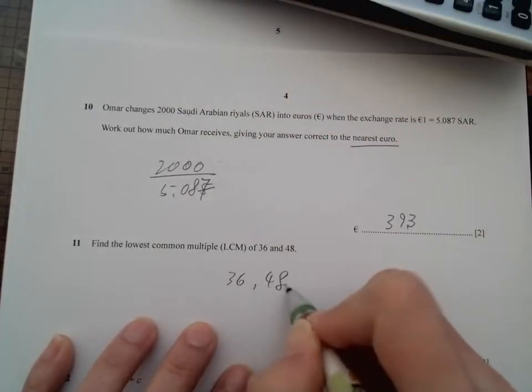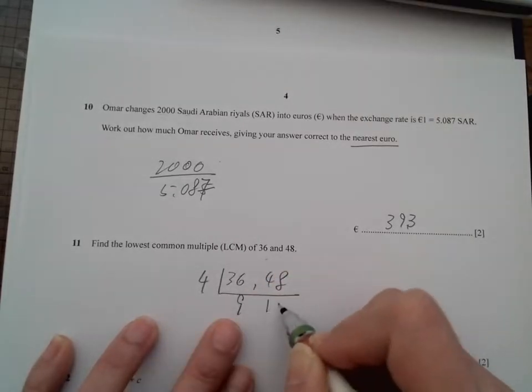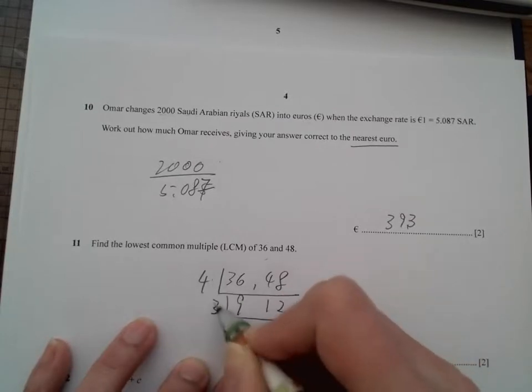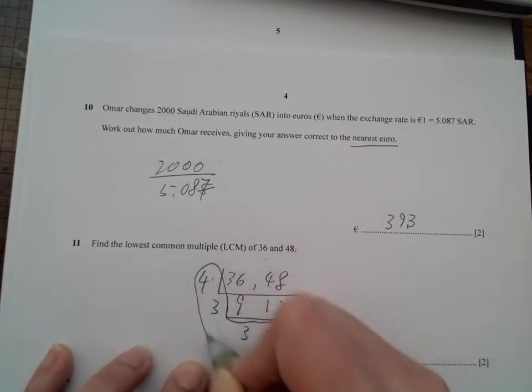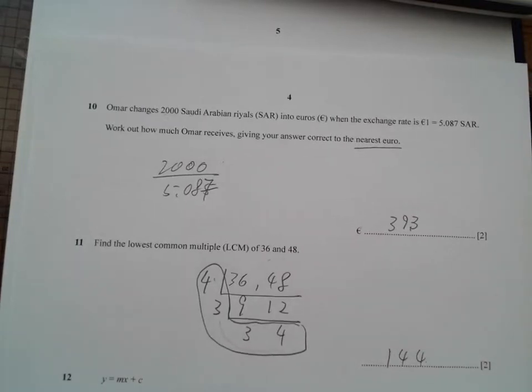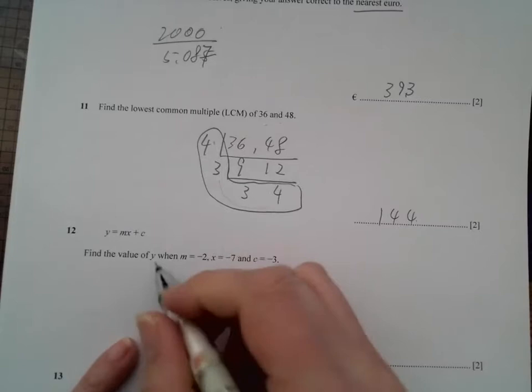Lowest common multiple. So we have 36, 48, we divide. So we could have 4, 9, and 12, a bit more 3 and 4. So we multiply all the LCM shape here. So 12 times 12 is 144.